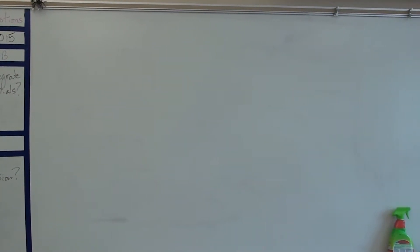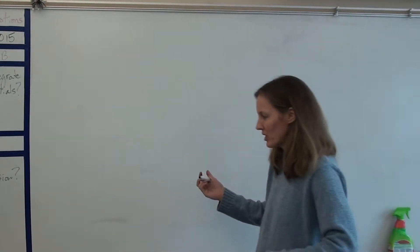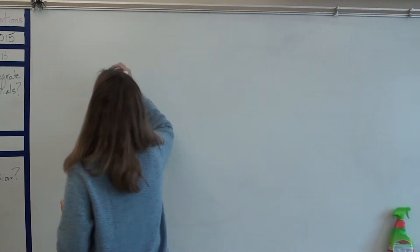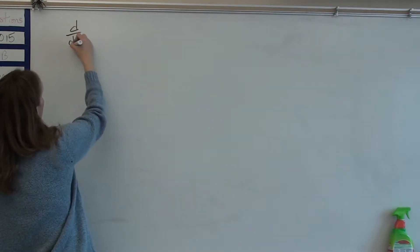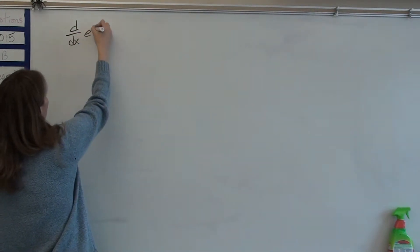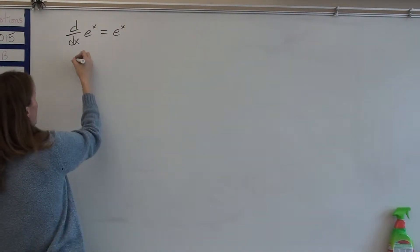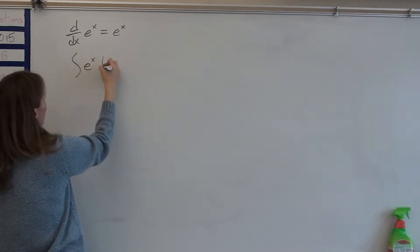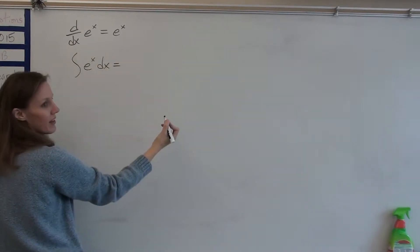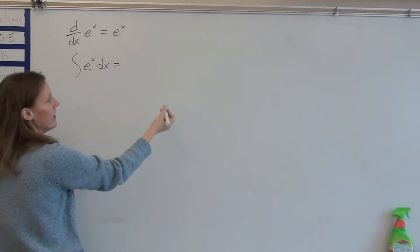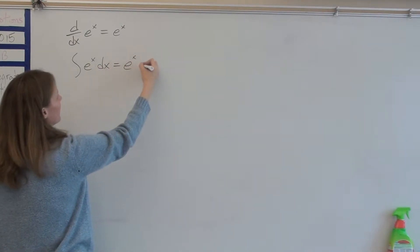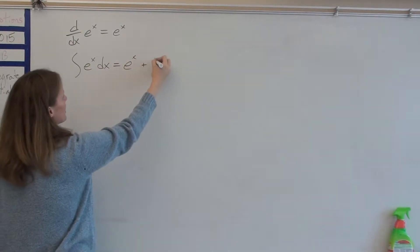Today we're going to learn how to find antiderivatives of functions involving e to the x. Quick refresher: the derivative of e to the x is e to the x. So the antiderivative of e to the x is e to the x plus c.